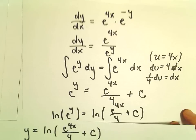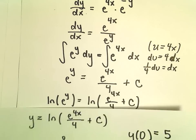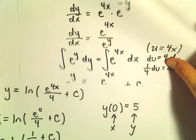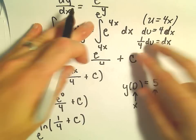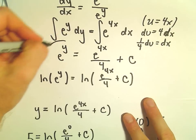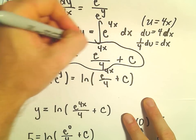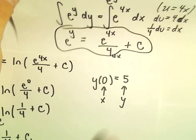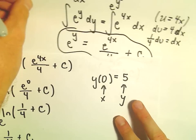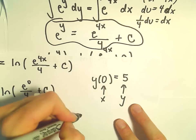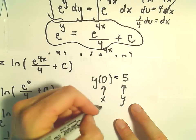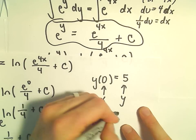Let's see what would have happened if we had left it alone before we took the natural logarithm. Notice if we used our initial condition there - if you plug in y = 5, we would get e^5 = 1/4 + C.